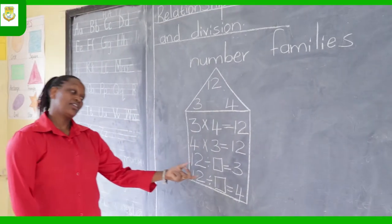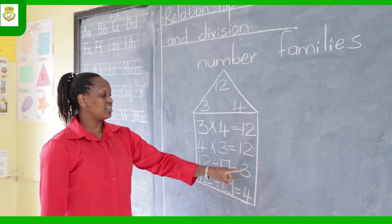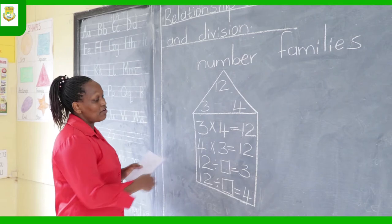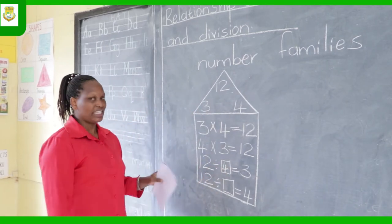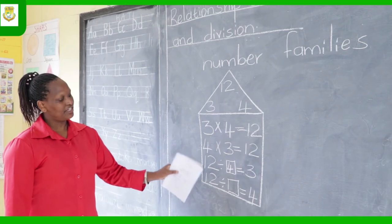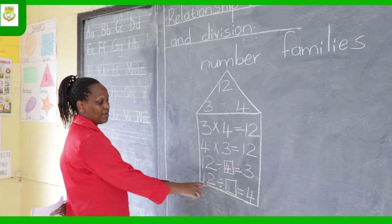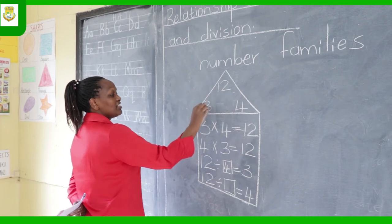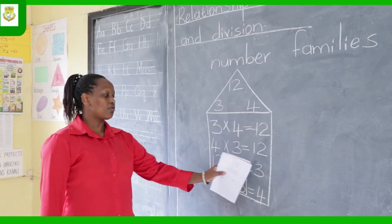In this sum we have 12 divided by box equals 3. You have 3 there and 12 there, so the missing member of that family is 4. You do not calculate — you just look and find it. The next one: 12 divided by box equals 4. Here you have 4 and 12, so the missing number is 3. Here you fill 3. So 12 divided by 4 equals 3.